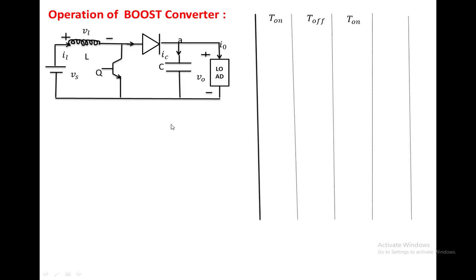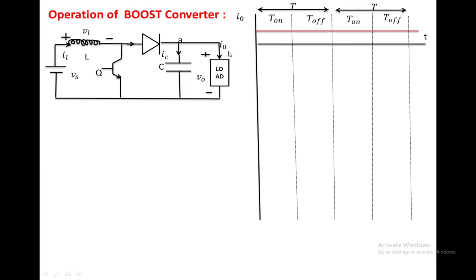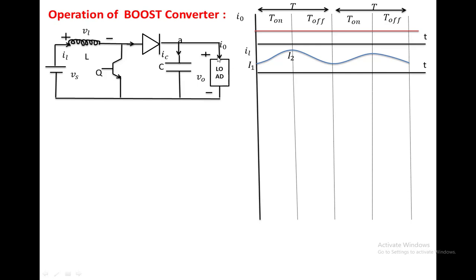We have taken two cycles of the switch operation: t-on, t-off time, then again t-on, t-off time. This is one cycle and this is another cycle. We have taken the load current as a constant, so we have drawn a constant line with respect to time. Next, we draw the inductor current. When the switch is on, current passes from source through the inductor and switch, and returns to the source. Whatever current is required by the load must be supplied by the capacitor in this interval.